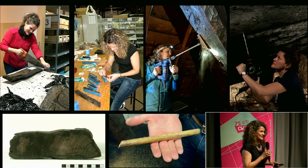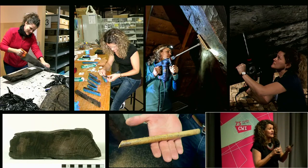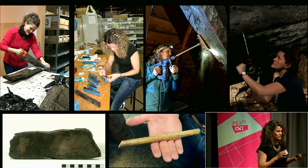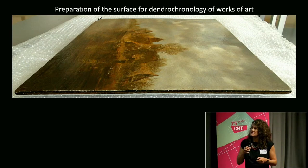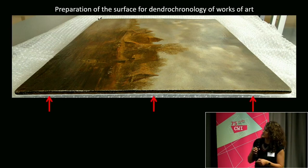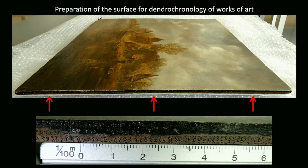The art world especially has been demanding more and more that we employ non-invasive methods. For instance, this is a panel painting, and the classical way to access the tree ring pattern is to clean a thin line here towards the underside. I always try to cut as little as possible and be as least invasive as possible, but this is still an intervention — this is a painting from the mid-17th century, and now it's going to have that mark for the rest of its life.